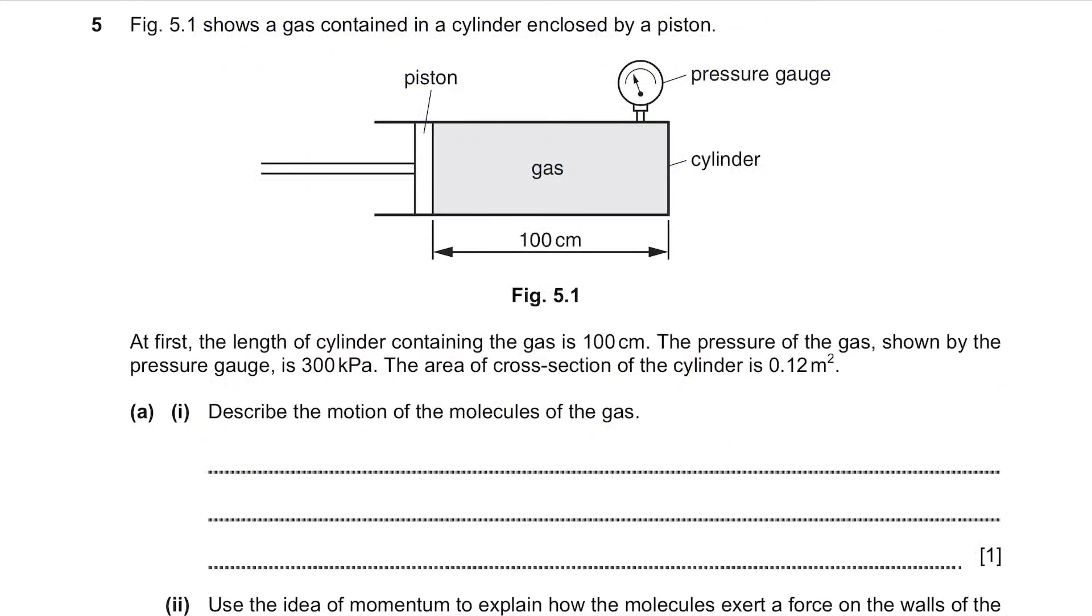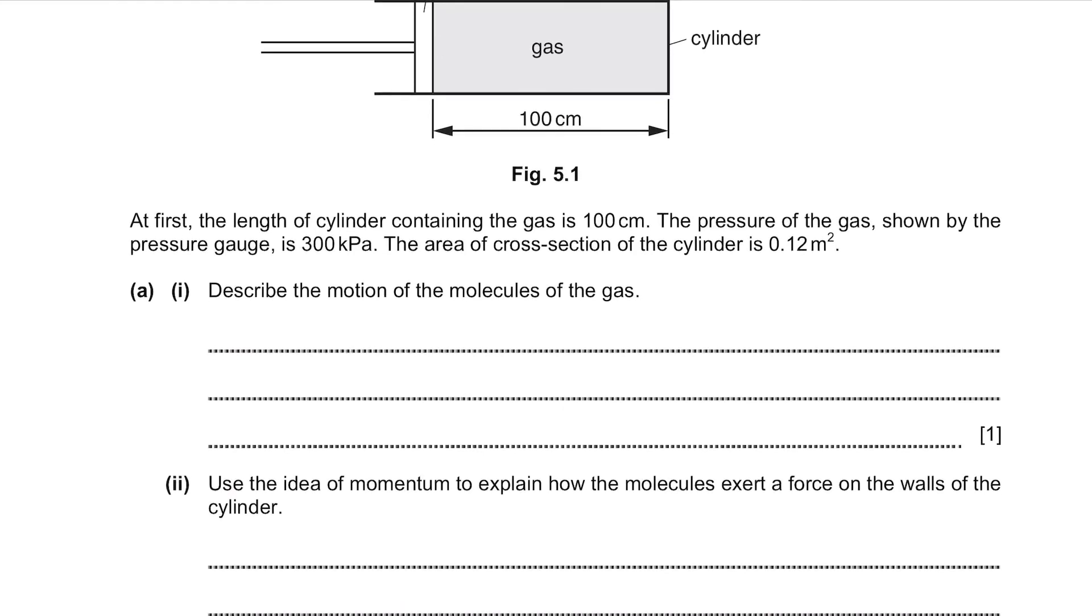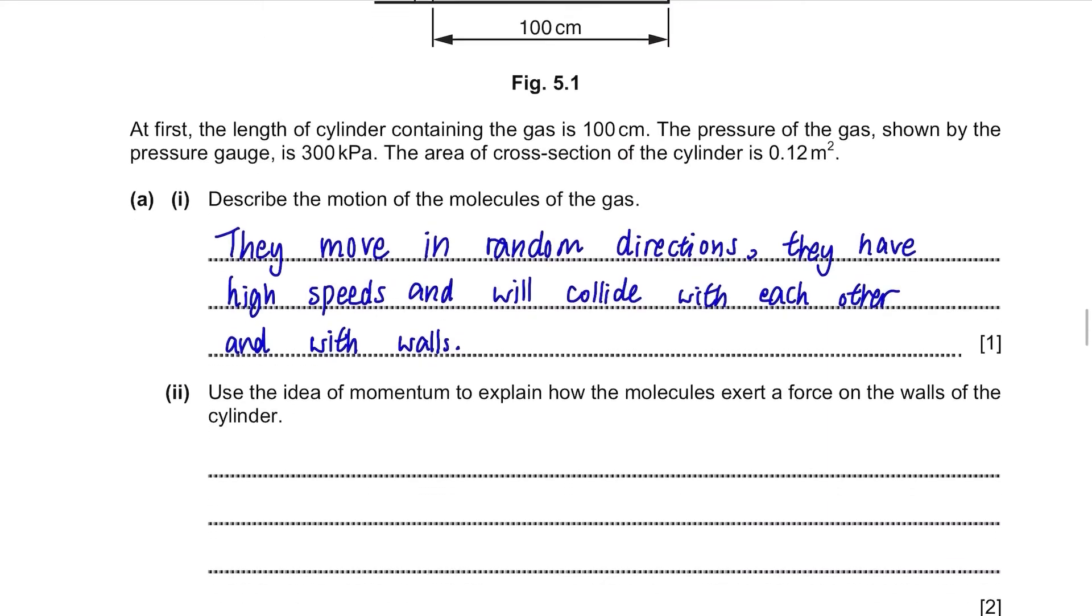Question 5. Figure 5.1 shows a gas contained in a cylinder enclosed by a piston. At first, the length of cylinder containing the gas is 100 cm. The pressure of the gas shown by the pressure gauge is 300 kPa. The area of cross-section of the cylinder is 0.12 m². Part A. Describe the motion of the molecules of the gas. How do the gas particles move? They move in random directions, they have high speeds and will collide with each other and with walls.